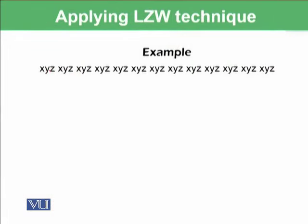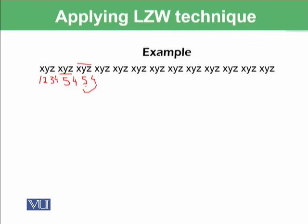Let's see what LZW encoding is. We have information we want to store: XYZ space XYZ space and so on. We encode X as 1, Y as 2, Z as 3, and space as 4. Since it is adaptive, when XYZ appears again, it gets a single new code — say 5. Then the sequence is stored as 5, 4, 5, 4. This means you are not storing three codes for XYZ; instead you are storing just one code, 5, against XYZ. In this way it learns adaptively at runtime and saves a lot of space.